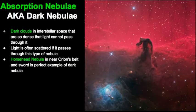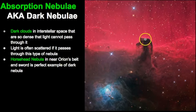The first type we'll examine is the absorption nebula. This is such a dense, dark cloud that light cannot pass through it — it essentially absorbs the light passing through. The classic example is the Horsehead Nebula, located in Orion near the belt and sword. As you can see, it has no definitive shape, but it does resemble a horse's head.